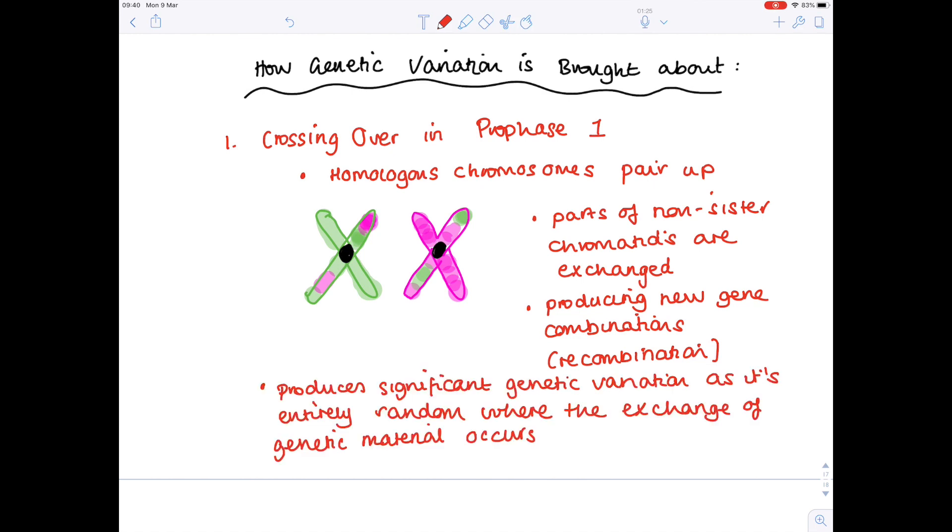So just to repeat, this process of crossing over that occurs in prophase one produces significant genetic variation as it's entirely random where the exchange of genetic material occurs. And so actually what you'll find is that your four haploid daughter cells will all be genetically variable.